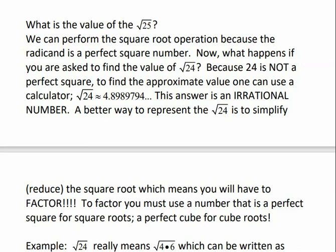What happens if we don't have a perfect square? For example, if we were trying to find the square root of 24. Because 24 is not a perfect square, to find the approximate value you can use a calculator and you would get 4.8989794, and it would keep going because it's an irrational number.